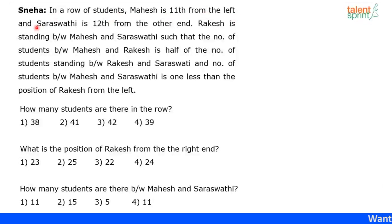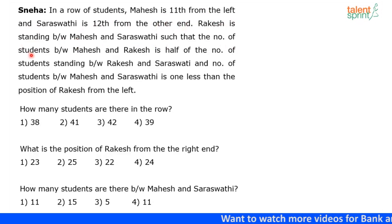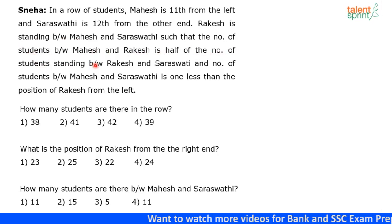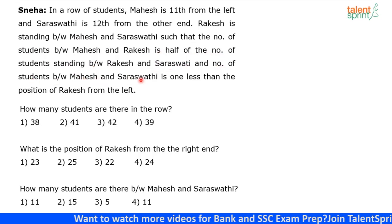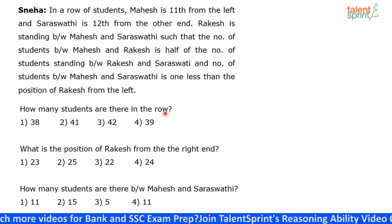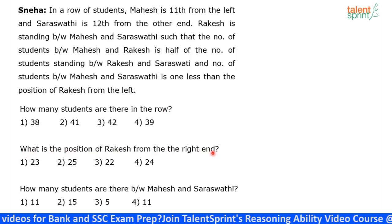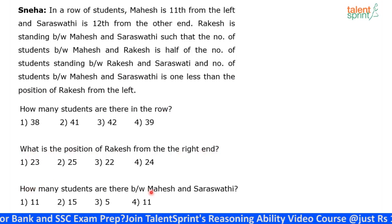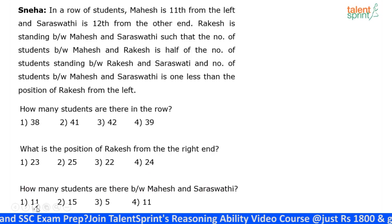In a row of students, Mahesh is 11th from the left and Saraswati is 12th from the other end — which is the right end. Rakesh is standing between Mahesh and Saraswati such that the number of students between Mahesh and Rakesh is half the number of students between Rakesh and Saraswati. The number of students between Mahesh and Saraswati is one less than the position of Rakesh from the left. Three questions: How many students are there in the row? What is the position of Rakesh from the right end? And how many students are there between Mahesh and Saraswati?